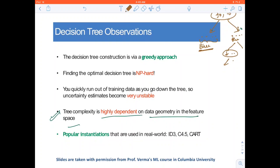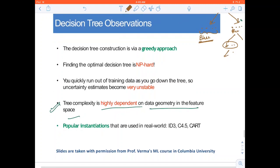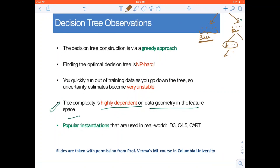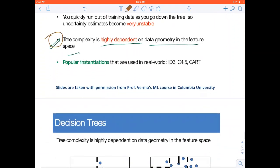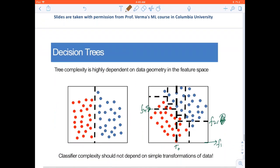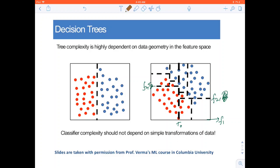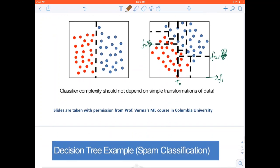Let us look at some of the observations of the decision tree. It is a greedy approach. We quickly run out of training data as you go down the tree because we go down in log n steps. This is an interesting observation: tree complexity is dependent on the data geometry. How can we see this? Just by rotating the data, we get so many more splits and the tree becomes more complicated.